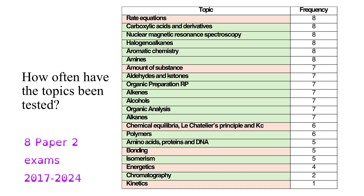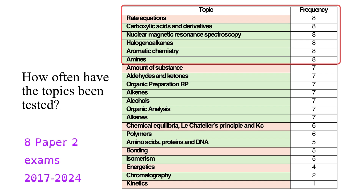Knowing that some topics appear every single year is of great importance when prioritizing your revision. There are six topics that have been on all eight of the Paper 2s for this course: rate equations, carboxylic acids and derivatives, nuclear magnetic resonance spectroscopy, halogenoalkanes, aromatic chemistry, and amines. These six topics are a really good place to start your revision.